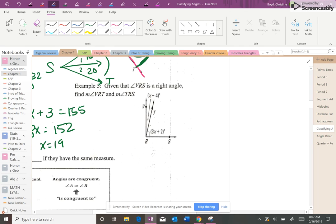The next one tells you that two of these angles are a right angle, so this together equals 90. X plus 3 and 4X minus 10, that's 5X minus 7 equals 90.